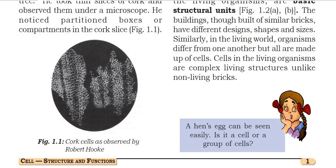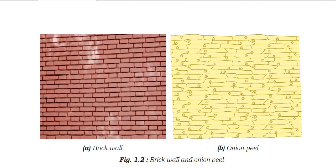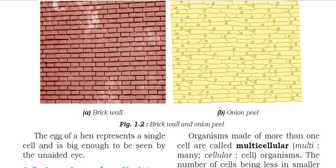Now I will ask a good question and answer it. A hen's egg can be seen easily — we can observe a hen's egg. Is it a cell, or a group of cells? It is a single large cell, as we can see from the shell outside.